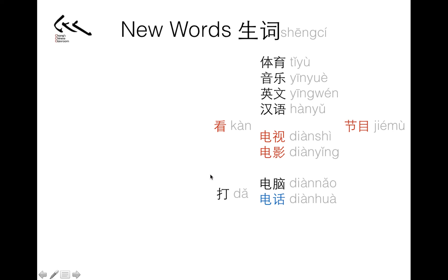Remember this word? 打. When this goes with ball games it means to play; with computer games it also means to play. 打电脑 is kind of like to use or play the computer. And 打电话 — the word 打 has a meaning of to hit. When we make a phone call, the hand gesture is a bit like holding a machine. So we use 打 to say make phone calls: 打电话 means make phone calls.